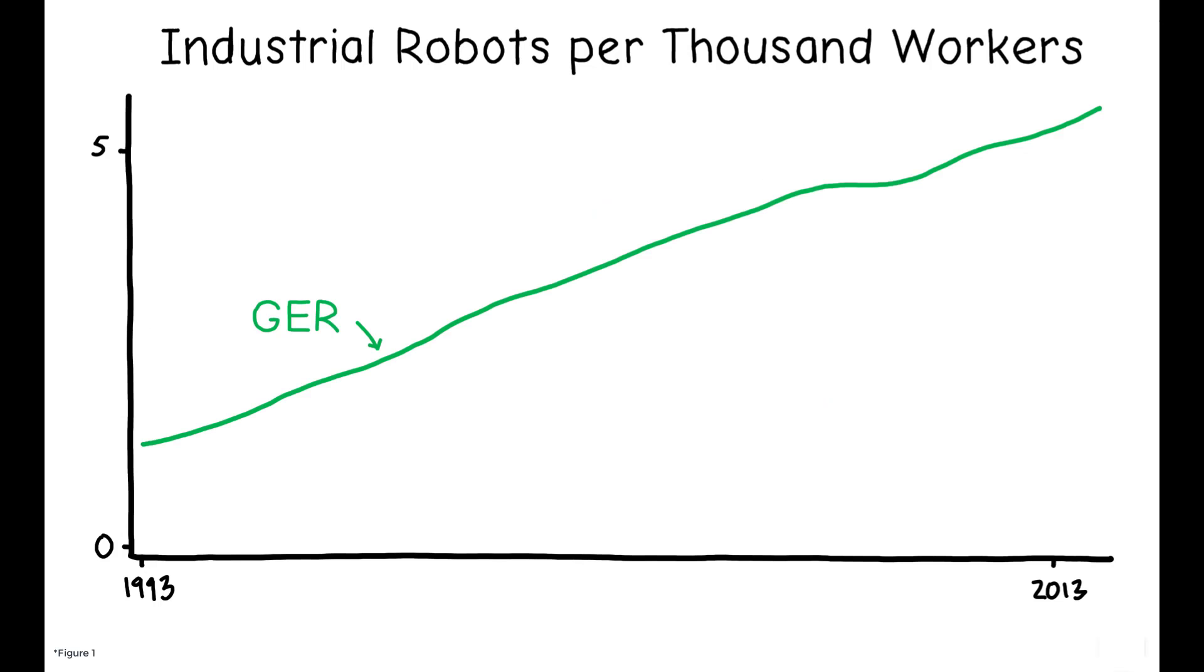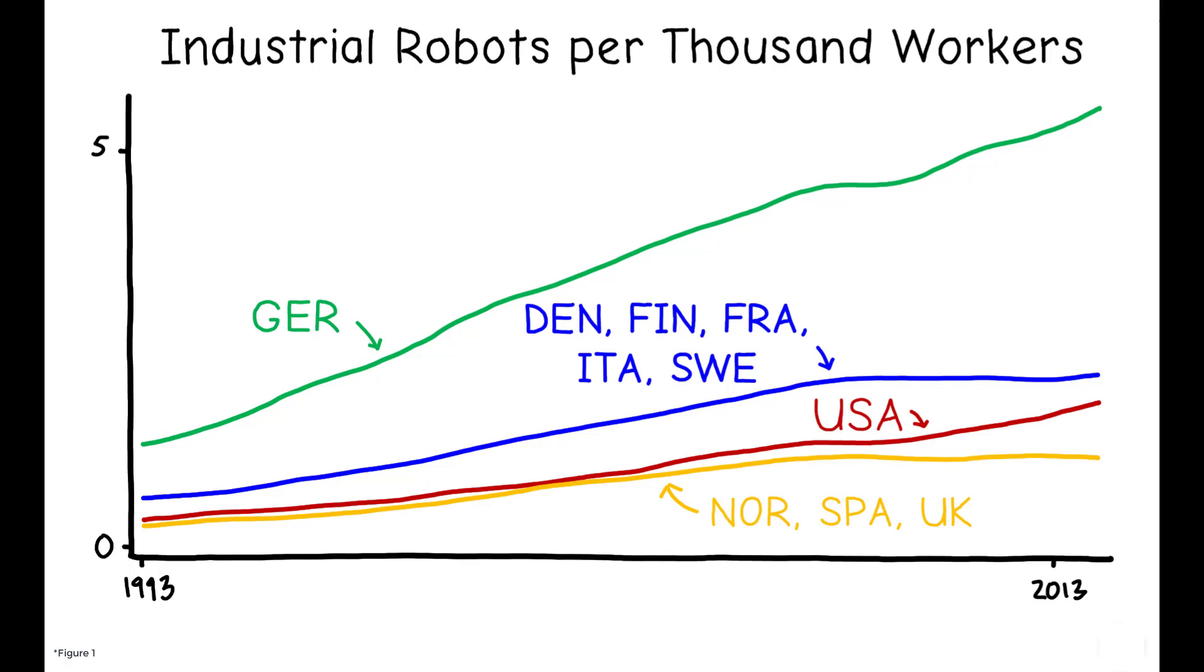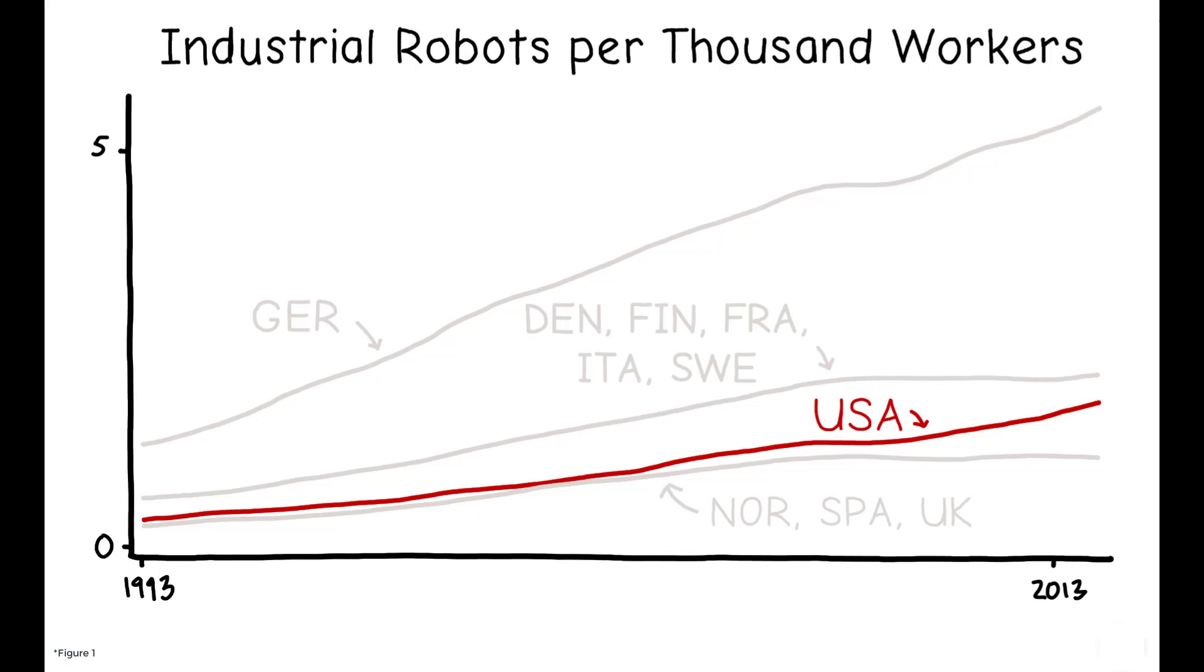Over that period, there was a steady increase in the stock of industrial robots in both the U.S. and Western Europe, with the increase in the former roughly equivalent to one additional robot per thousand workers.